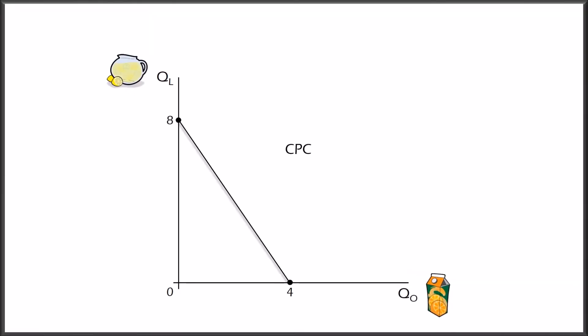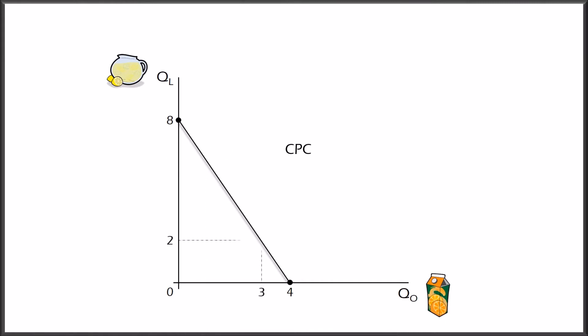Note that the CPC does not show the actual consumption of an individual — it just shows the possibilities given the person's budget and prices. This individual may prefer two units of orange juice with four units of lemonade, or if they prefer lemonade, one unit of orange juice and six units of lemonade, or if they prefer orange juice, three units of orange juice and two units of lemonade. This is what we call a movement along the CPC. Changes in preferences lead to changes in the choice of consumption, but not of the CPC itself. As long as combinations are efficient, the individual's choices will lie on the line.